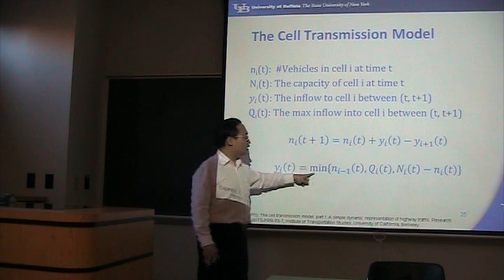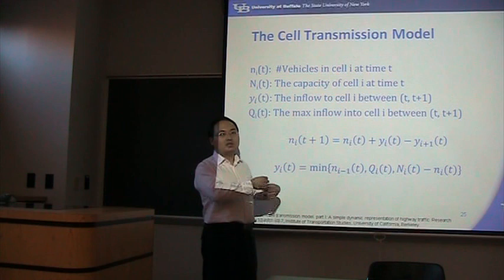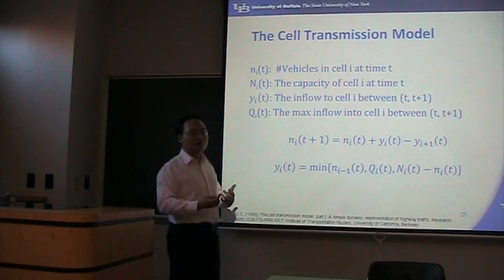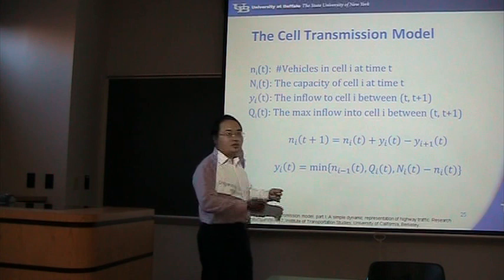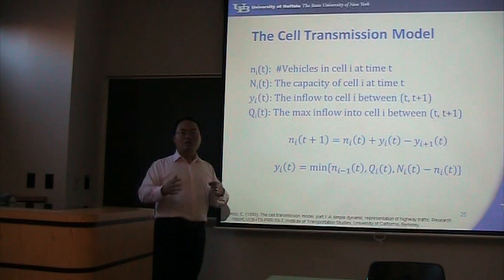The model employs a simplified assumption: the inflow is the minimum of three quantities. The first constraint is that the inflow cannot exceed the total number of vehicles in the backward cell — the cell behind must have enough vehicles to supply. Because the cell length is defined as the distance a vehicle travels in one time step, vehicles from two cells behind cannot reach the current cell in one step.